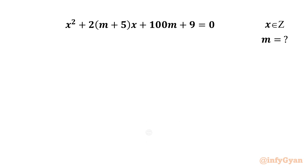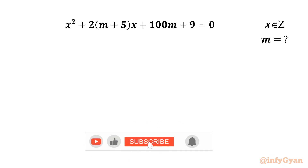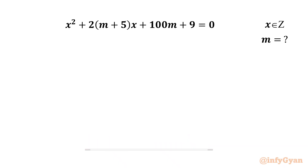Hello friends, welcome back to Infigyan. Today in this video we are going to solve one very interesting question from algebra. Find the value of smallest positive integer m such that the quadratic equation x² + 2(m+5)x + 100m + 9 = 0 has only integer solutions. So x should be integer and we have to find the smallest positive integer m.